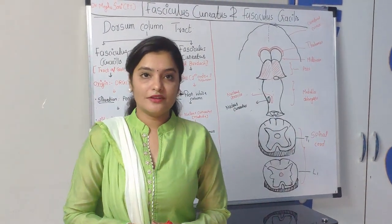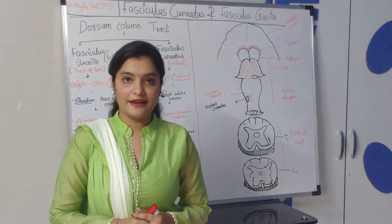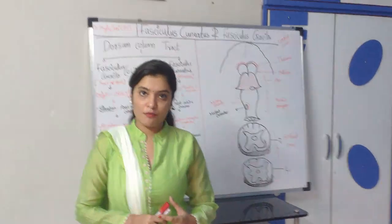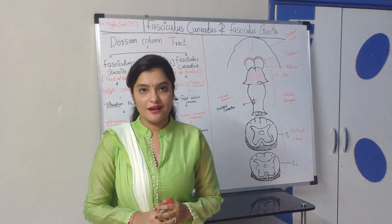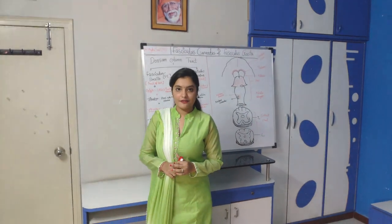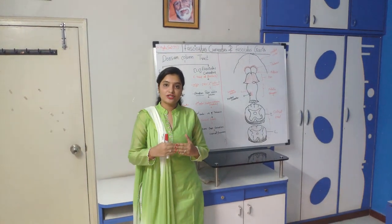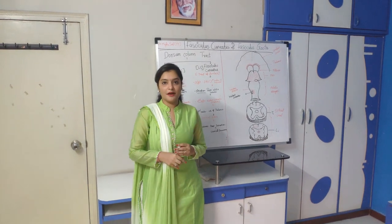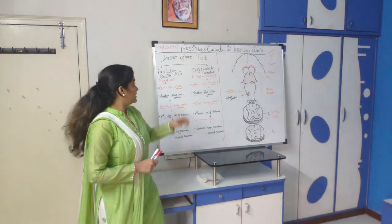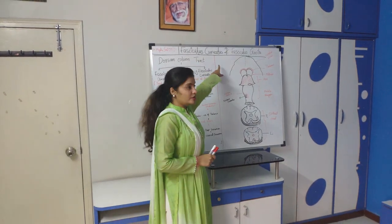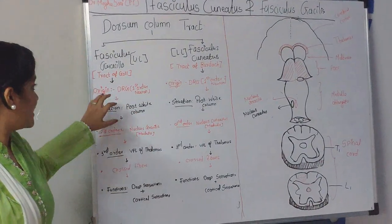Today I am going to cover a major ascending tract — the dorsal column tracts. This is a very common tract, just like the spinothalamic tract. The dorsal column tracts are the tracts which pass through the posterior part of the spinal cord. There are mainly two types: fasciculus cuneatus and fasciculus gracilis.